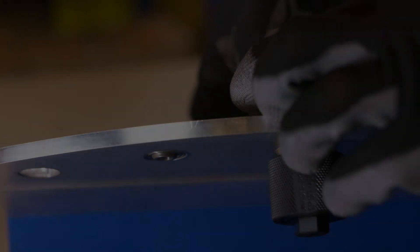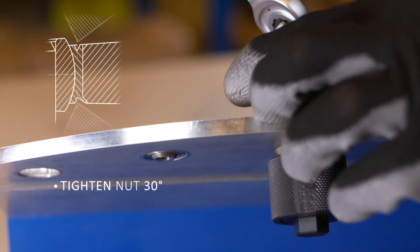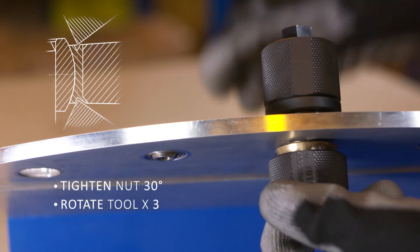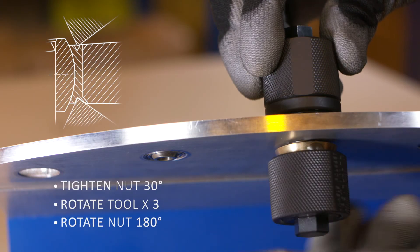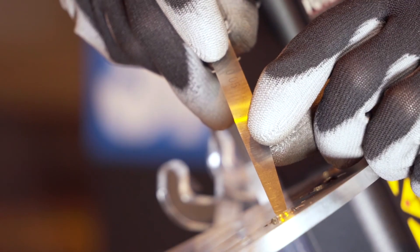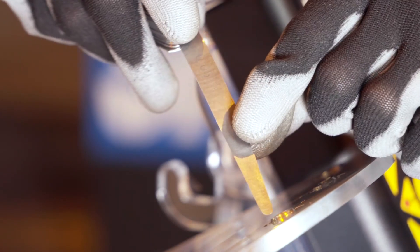Repeat the process previously shown, tightening the nut by approximately 30 degrees, and rotating the tool by around three full revolutions until the nut has rotated around 180 degrees. Finally, inspect the swage to ensure it has been successfully completed.